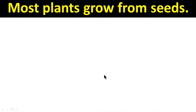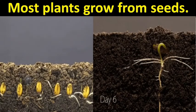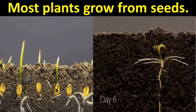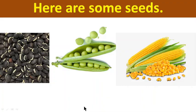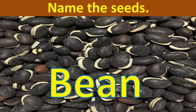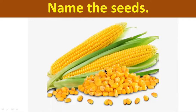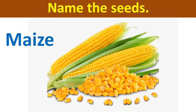Most plants grow from seeds. We can see plants grow from seeds. Here are some seeds. Name the seeds. These are bean — seed of bean. And these are pea — seed of pea. And these are seeds of maize.